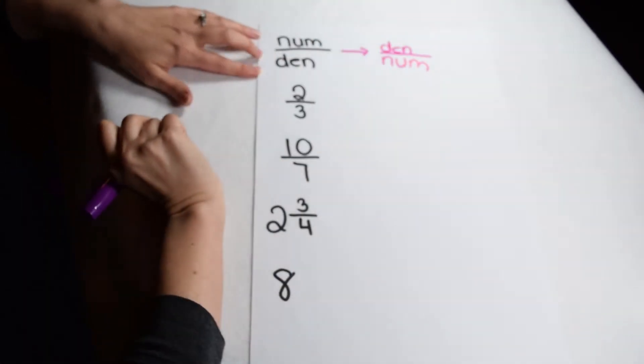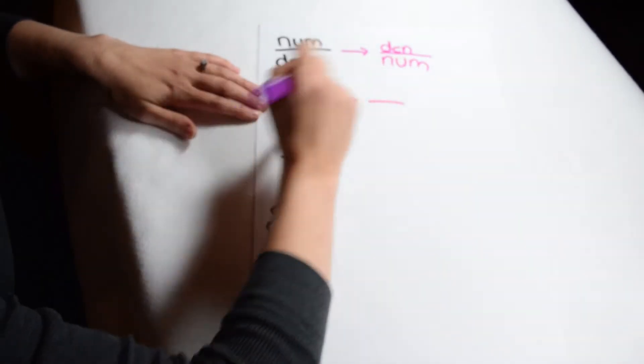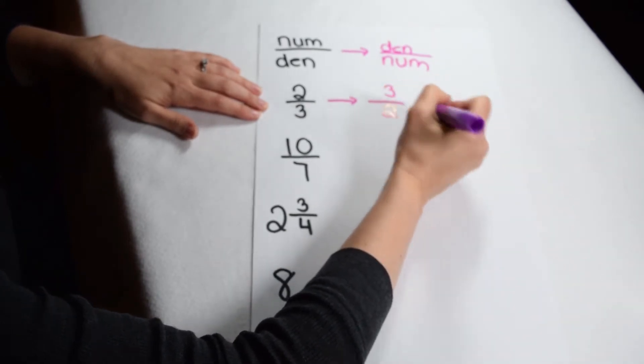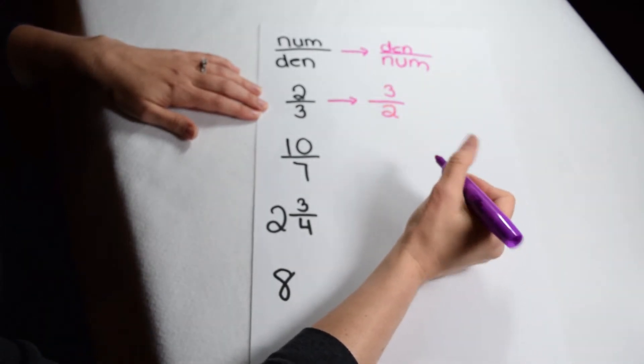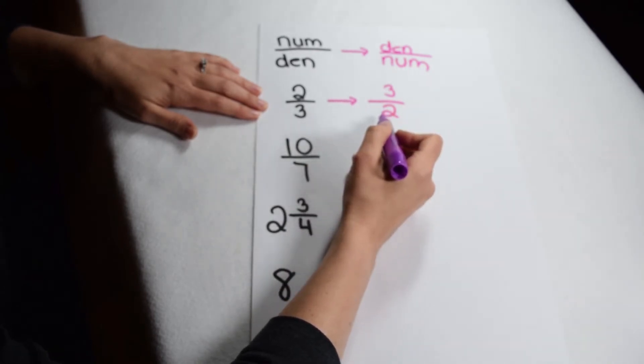So if I wanted to take the reciprocal of 2/3, I would simply flip it over. The 3 would go on top in the numerator spot, and the 2 would go on the bottom in the denominator spot. Notice there's not an equal sign between these two values because they're not equal, they're inverses of each other.